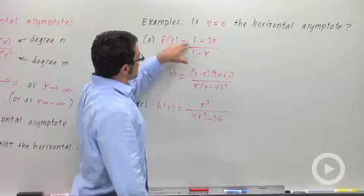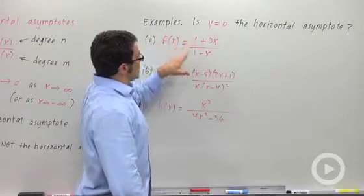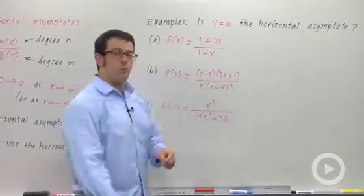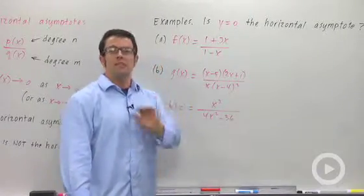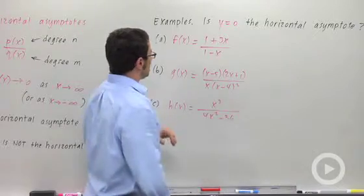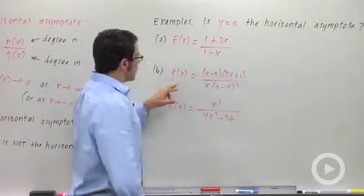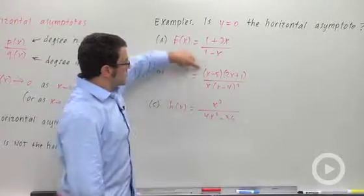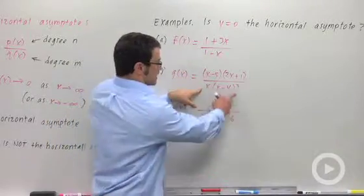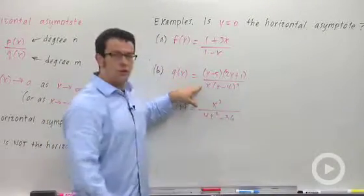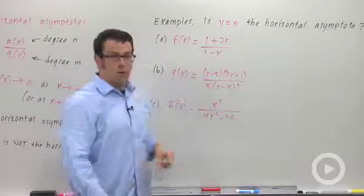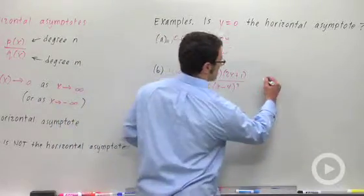This one, f of x equals 1 plus 3x over 1 minus x — the degree of the numerator and denominator are both 1. The degrees are the same, so y equals 0 is not the horizontal asymptote here. What about g of x? The degree of the top is 2 and the degree of the bottom is 3, so the degree of the denominator is bigger than the numerator. So here y equals 0 is the horizontal asymptote — yes.